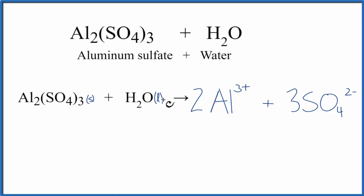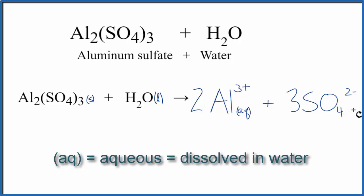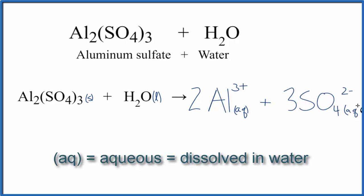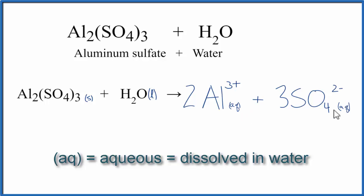Next, because we put the solid in the liquid and it dissolved, we need to write AQ after each of the ions. AQ means dissolved in water, aqueous. Since we've written aqueous here, we don't have to write H2O on this side of the equation. It's implied by having the AQ, which means dissolved in water.